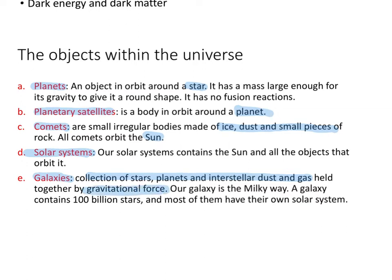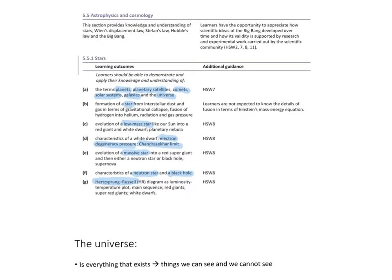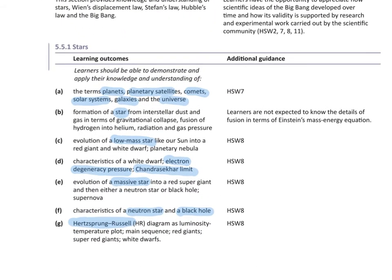Our galaxy is the Milky Way. A galaxy can contain hundreds of billions of stars and most of them have their own solar system. So we have finished the first part about the different objects you can find in the universe, and now we will look at the formation of stars — this is where things get more interesting.